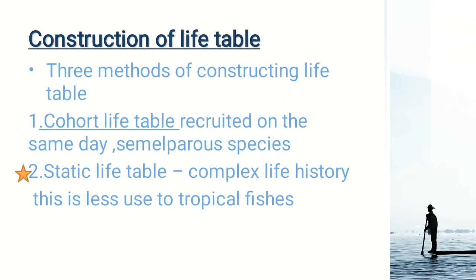The second type is the static life table, which follows complex life histories and is less used for tropical fishes. Unlike cohort life tables, these individuals do not share a cohort and have complex life cycles. The third type involves mathematical models. These life table mathematical models are essential for studying population dynamics, and knowledge of the biology of the organism is a prerequisite. In addition, the population may grow independent of density and show exponential increase in numbers, influenced by environmental factors.